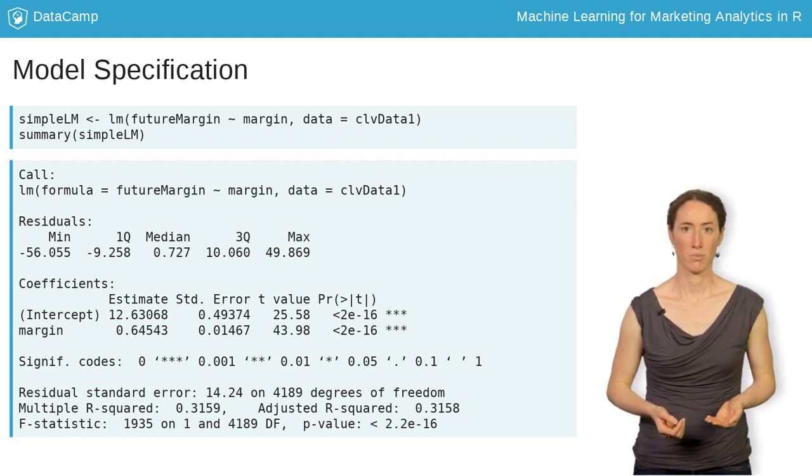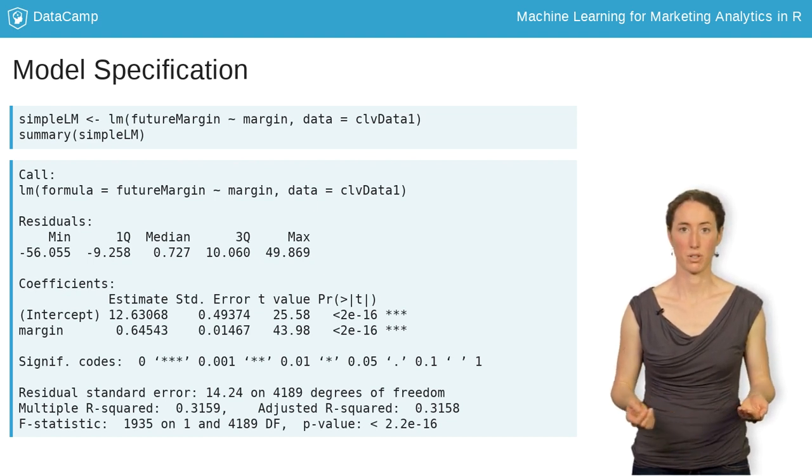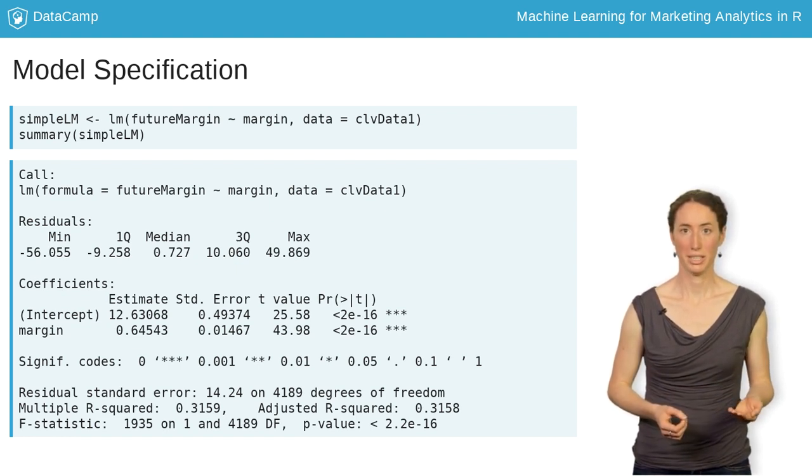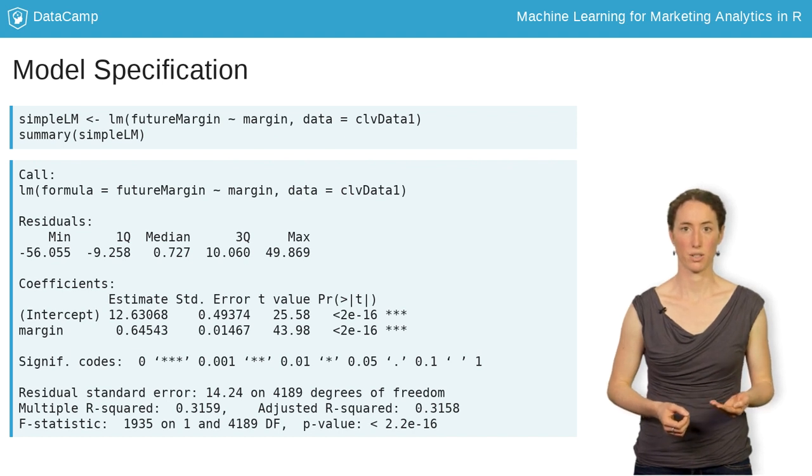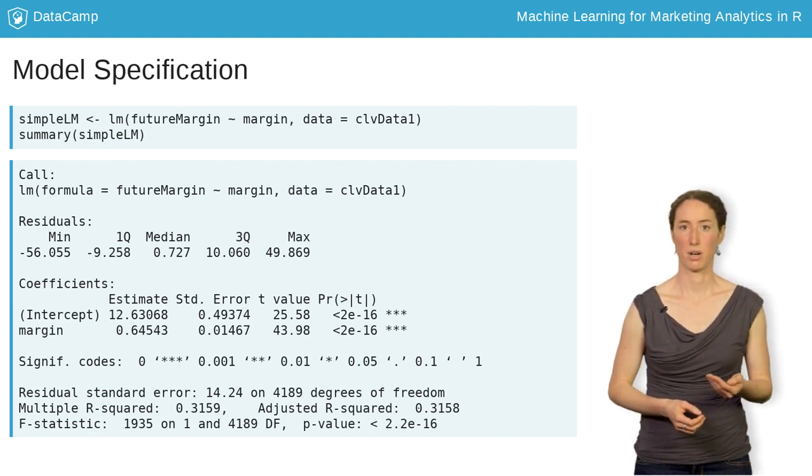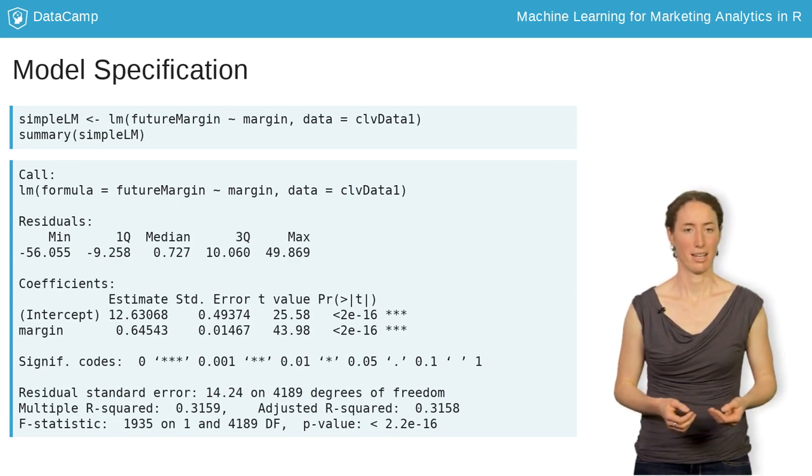Also, take a look at the multiple r squared at the bottom of the output. A value of roughly 0.32 means that about 30% of the variation in the future margin can be explained by the margin in year 1. But more on that later.